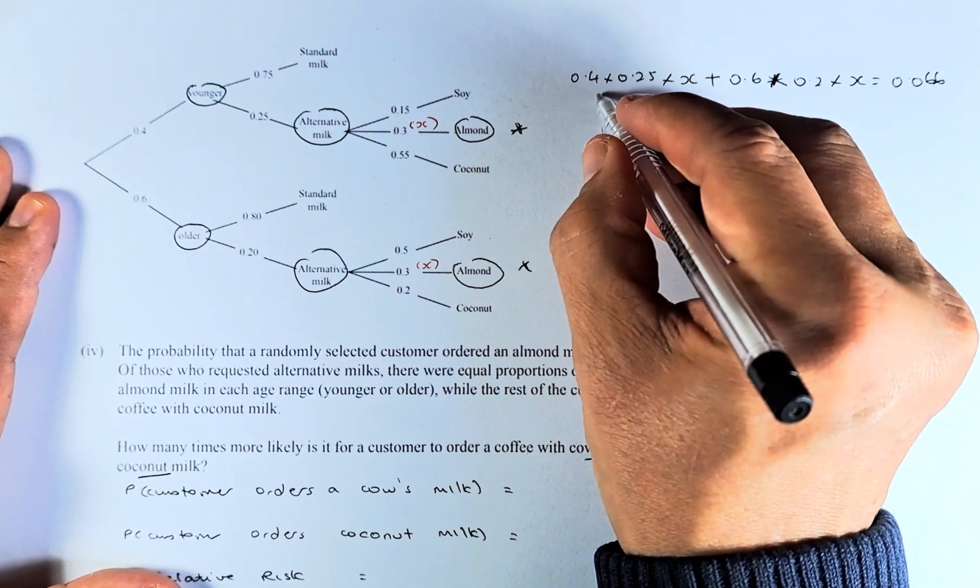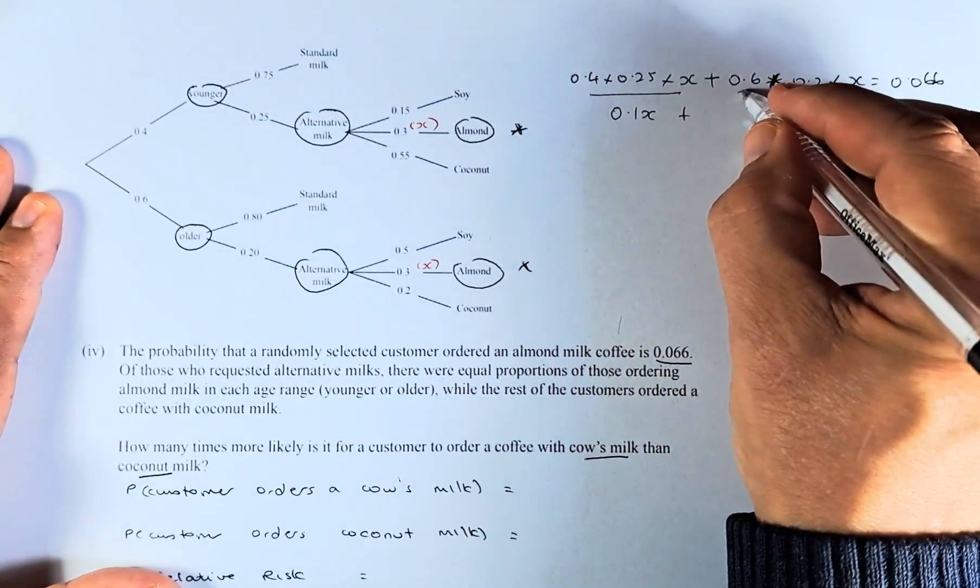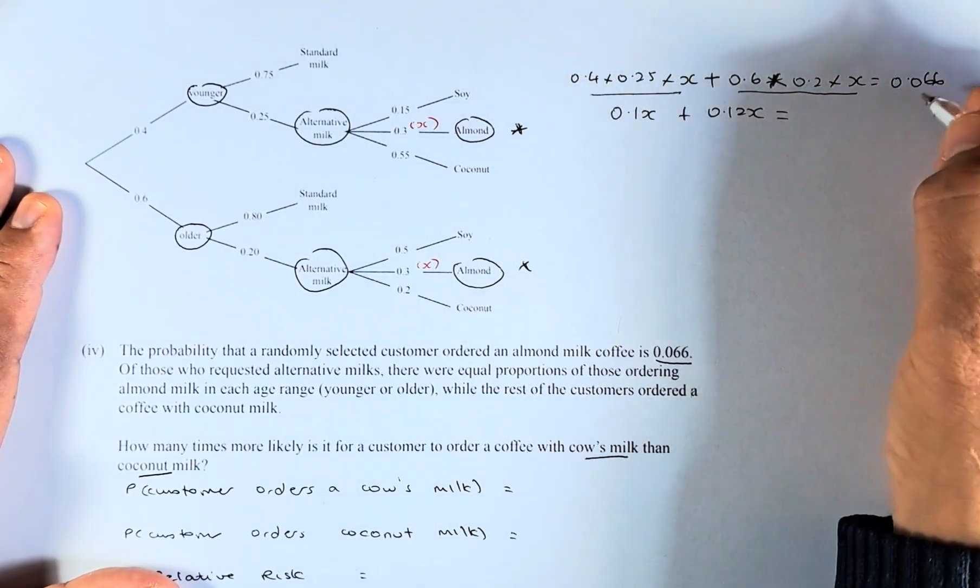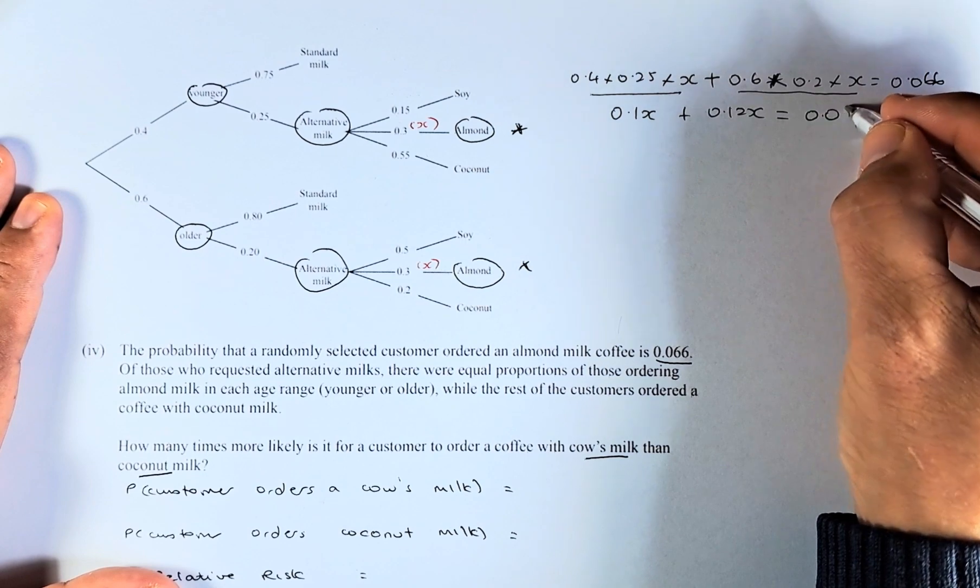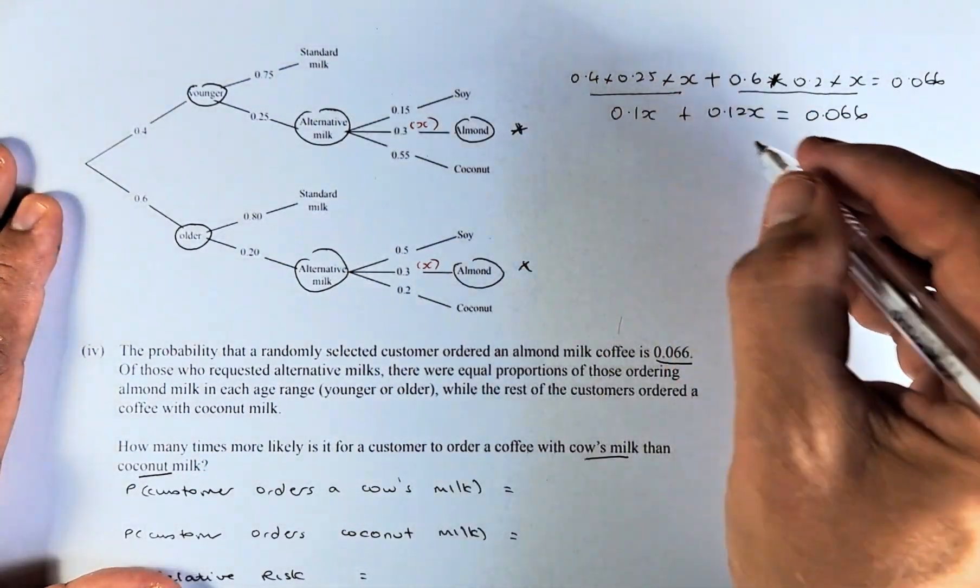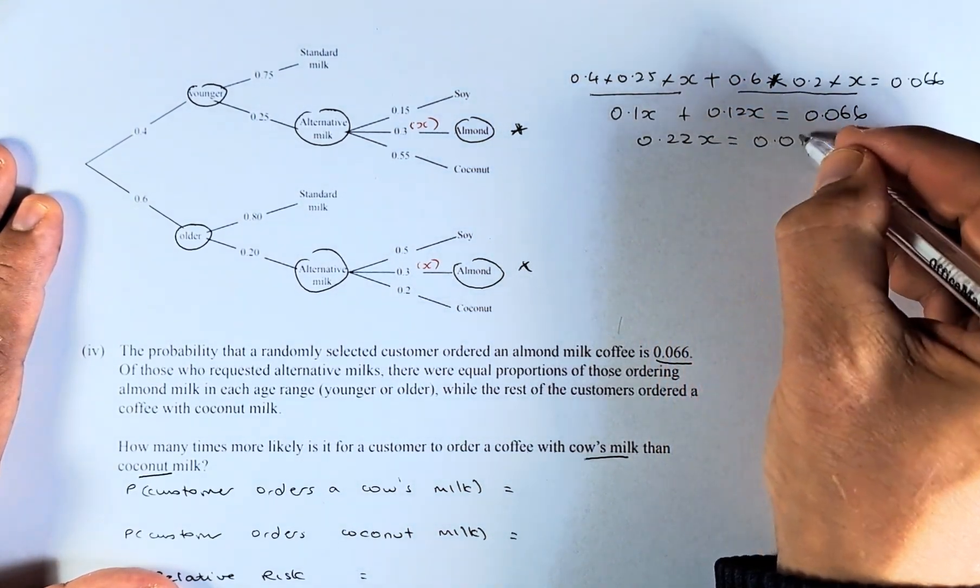This part here is going to be 0.1x. This part here is going to be 0.12x and they will be equal to 0.066. Now we are going to simplify using algebra. 0.22x equals to 0.066.